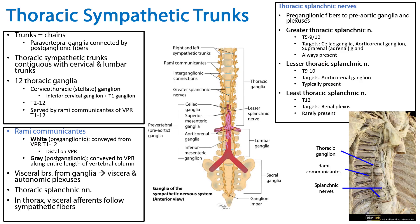In summary, we've discussed the sympathetic trunks within the thorax, their association with ventral primary rami of T1 through T12, white and gray rami communicantes, as well as the thoracic splanchnic nerves — the greater, the lesser, and the least — their associated ganglia, and their targets. Thank you for your time.